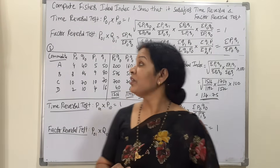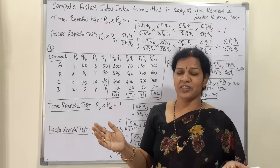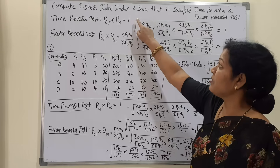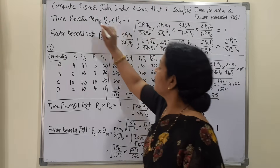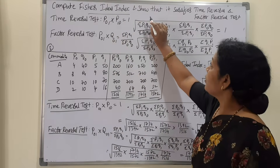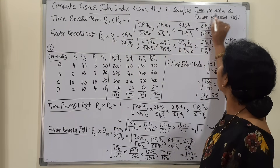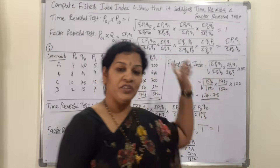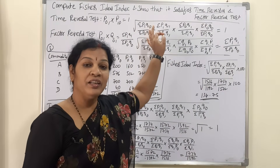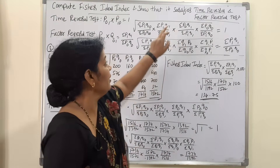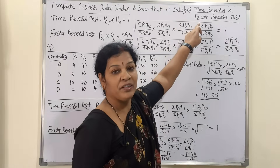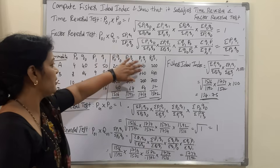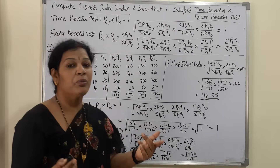Coming to the problem: they are asking us to compute Fischer's ideal index number and show that it satisfies the factor reversal test and time reversal test. We have to calculate Fischer's ideal index number and show whether it is satisfying the time reversal and factor reversal tests. That is the problem given.